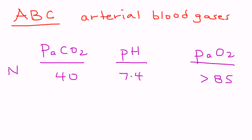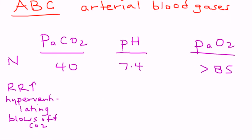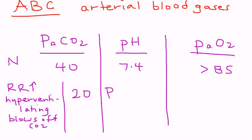The normal values are: PaCO2 about 40, pH about 7.4, and PaO2 greater than 85. In the acute phase of asthma, the respiratory rate goes up because the person is hyperventilating. When that happens, the person blows off CO2, so PaCO2 goes down — for example it might drop to 20 instead of the normal 40.